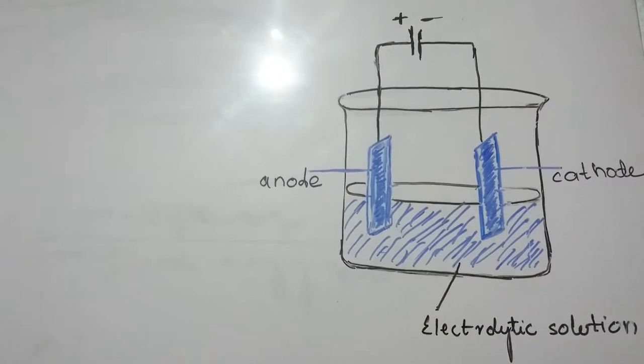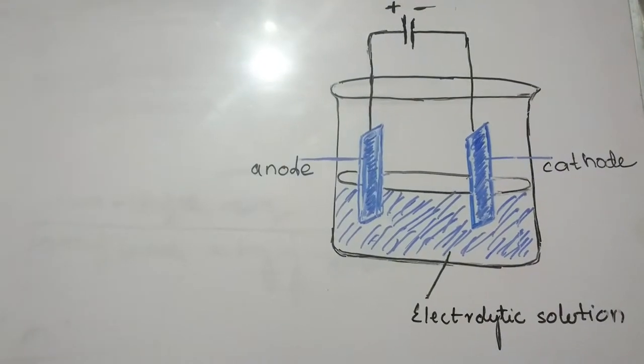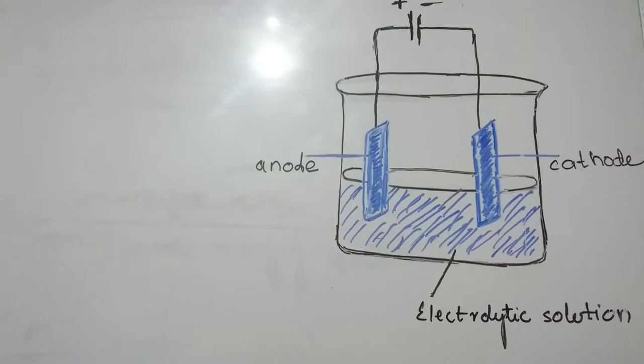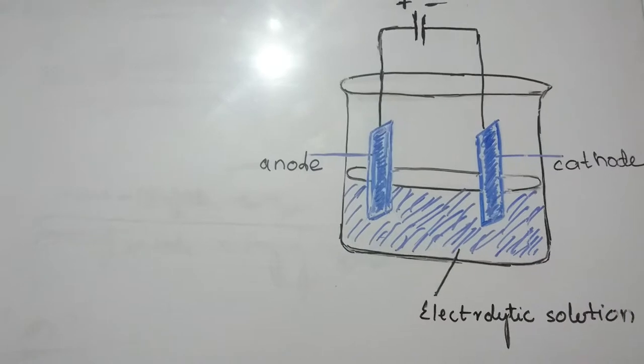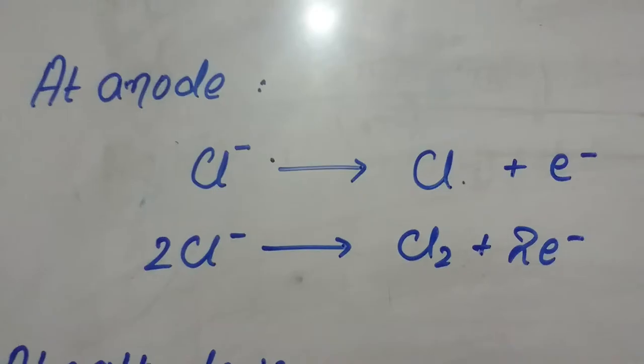We have connected one end of a plate with positive terminal of the battery called anode while another with the negative end of the battery which is called cathode. As the electricity is passed on, the electrolytic process started.